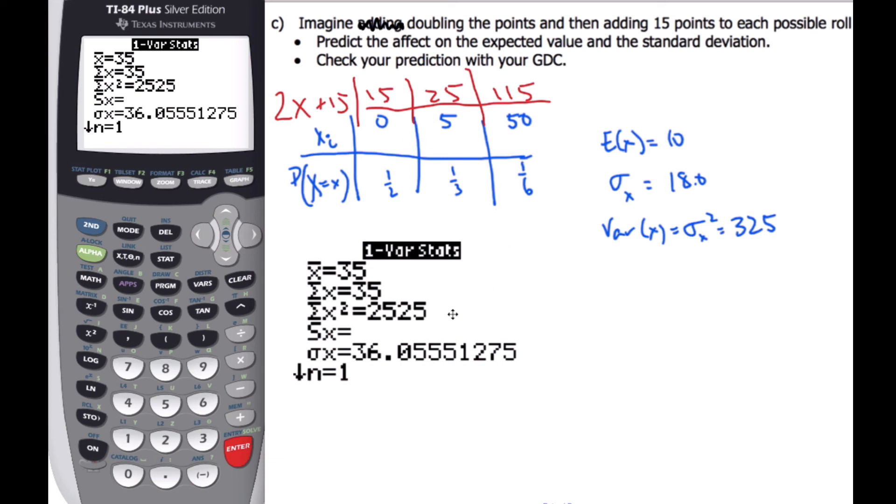Adding 15 shifts everything in a common direction, so it does not change the spread. It keeps it the same. So when I do standard deviation, I only double it, it's not affected by a linear addition. So, that's important.